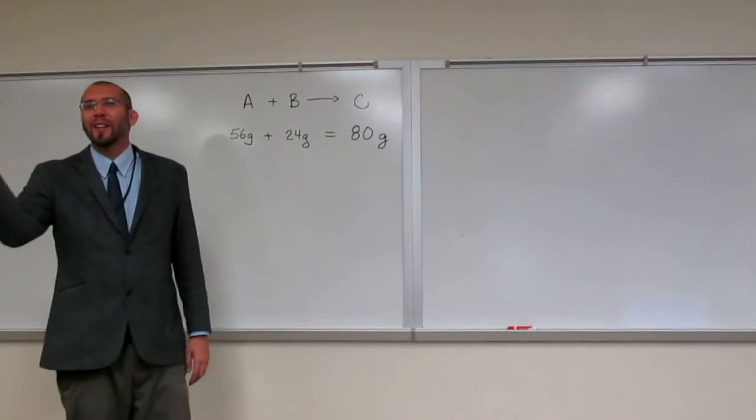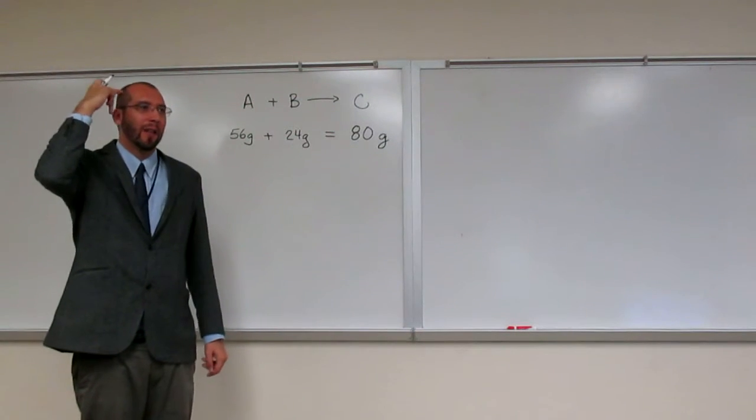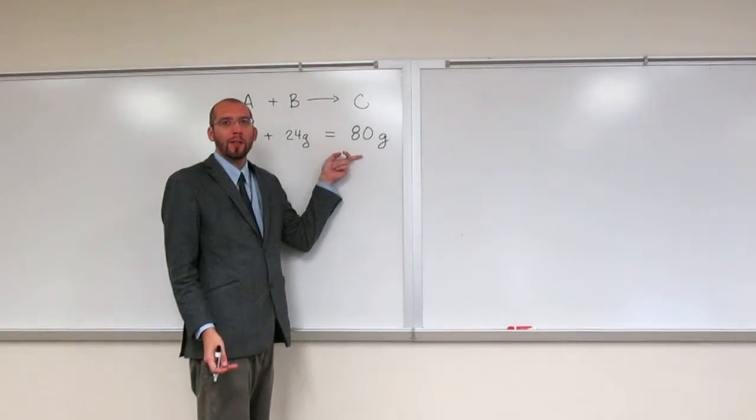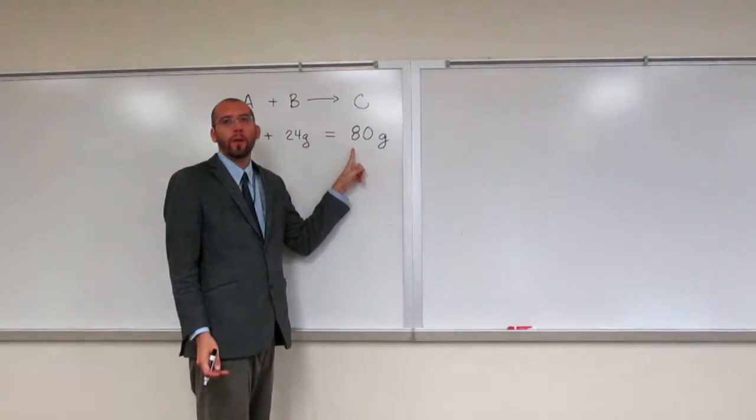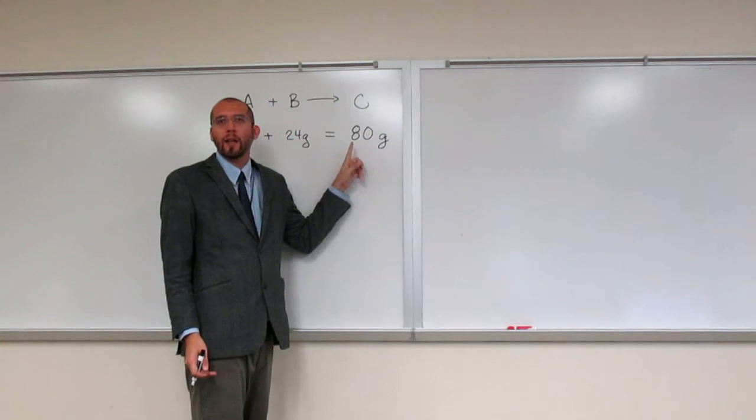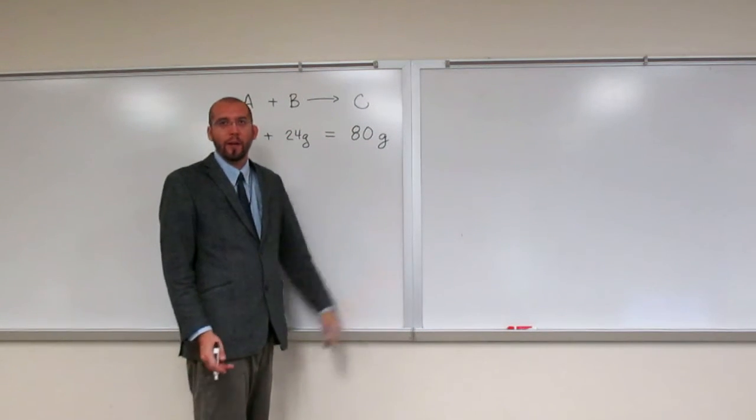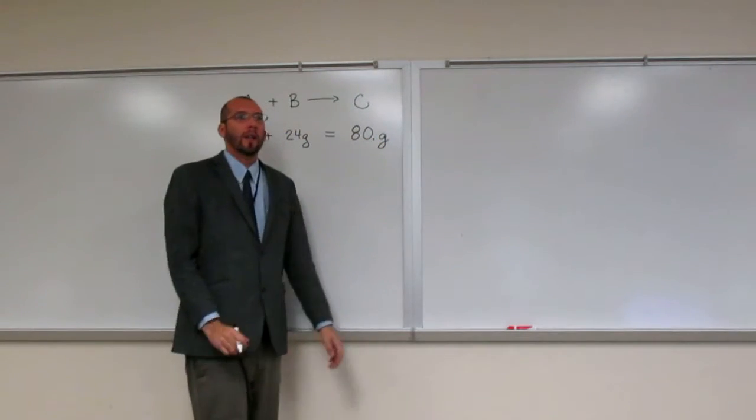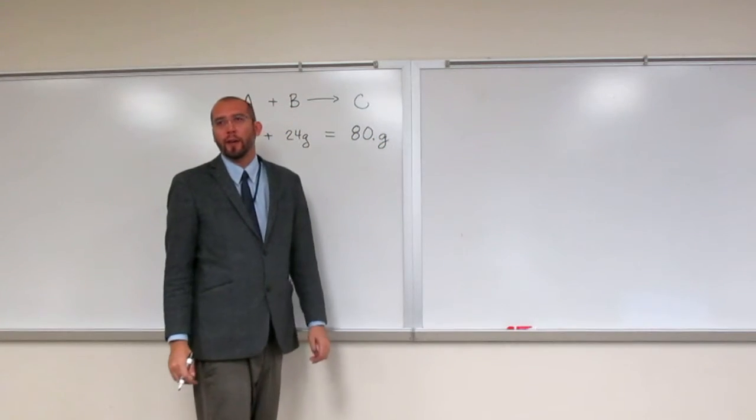But we're in chemistry class, so we have to remember our significant figures. So we look at this particular answer, this is only telling us that one of those figures is significant, the other one is insignificant. So in order to tell that all of them are significant, we've got to put our decimal place there.